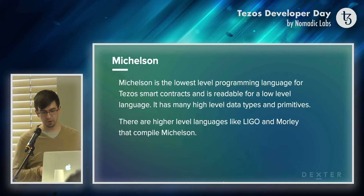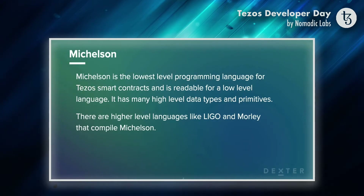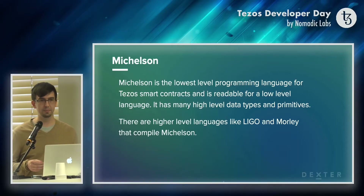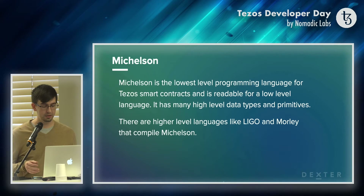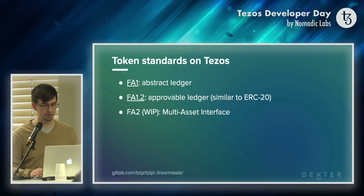What about the smart contract language side of Tezos? We have Michelson. It's the lowest-level programming language for Tezos smart contracts and it's relatively readable for a low-level language. It has a lot of high-level data types and primitives. In the ecosystem there are languages like LIGO and Morley that compile to Michelson, so you can code in a higher-level language and output to the language that Tezos uses for smart contracts.